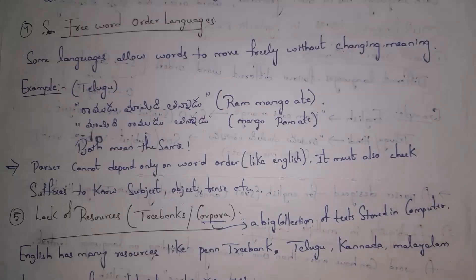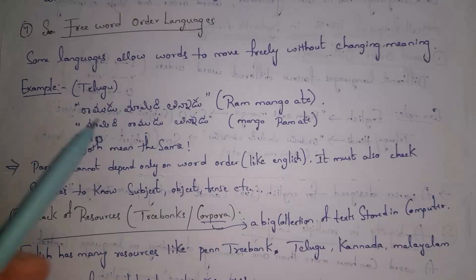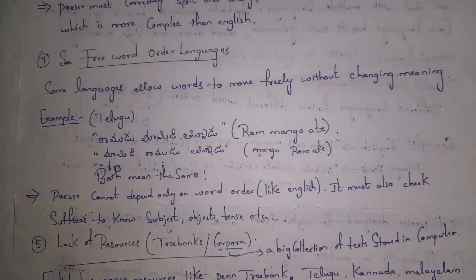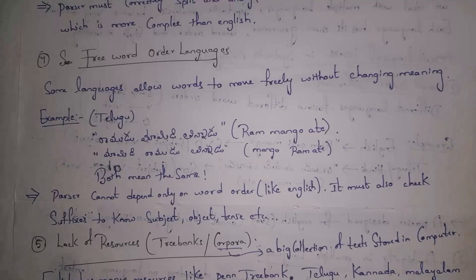The fourth issue is free word order languages. Some languages allow words to move freely without changing the meaning. For example, in Telugu, 'Ramudu maamidi thinnadu' and 'Maamidi Ramudu thinnadu' have the same meaning. In English, changing the word order may cause grammatical mistakes, so English cannot rely only on word order. In English, we also need to check prefixes and suffixes to identify subject, object, and tense.